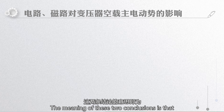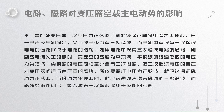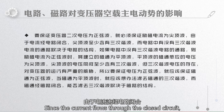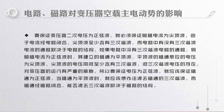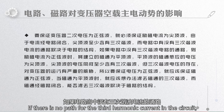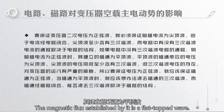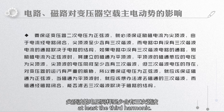The meaning of these two conclusions is that to ensure the voltage on the secondary side of the transformer is a sine wave, the excitation current must be a peaked wave, since the current flows through the closed circuit. The peaked wave contains at least the third harmonic. Whether there is a path for the third harmonic current in the circuit depends on the circuit structure. If there is no path for the third harmonic current, the excitation current is a sine wave, the magnetic flux established by it is a flat-topped wave, and the voltage induced by the flat-topped magnetic flux is a peaked wave.